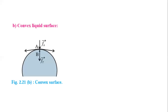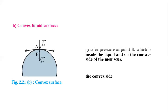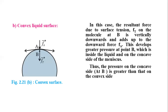Part two: convex liquid surface. You can see a diagram of convex liquid surface. Again, two points: A above the surface and B below the surface. In this case, the resultant force due to surface tension F_T at molecule B is vertically downward. This F_T adds to the downward force F_A, which is also in the downward direction, developing greater pressure at point B.